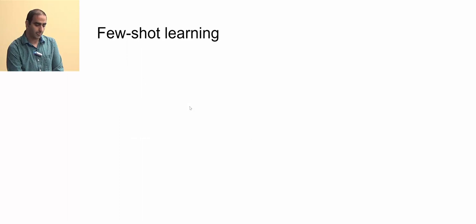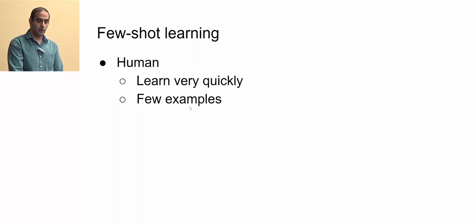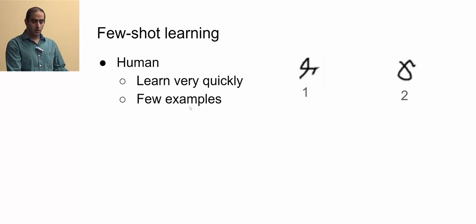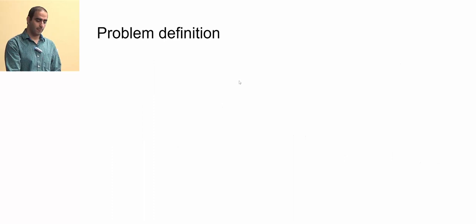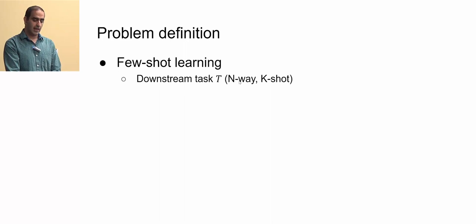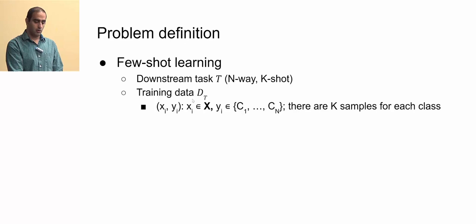So what is few-shot learning? Humans learn very quickly from few examples. If I show you two different characters and ask which one this is, you can easily identify them despite variations in the drawings, because we know a lot about handwritten writing. The question is: can machines do the same? We formally define a few-shot learning task as tau, n-way k-shot — n-way classification with k samples per class in the training data.